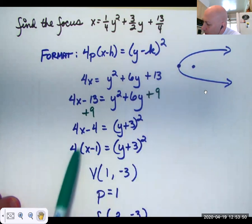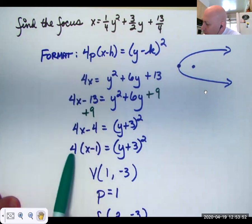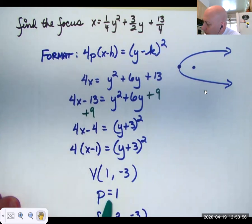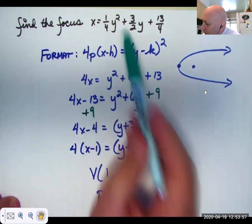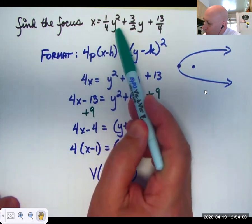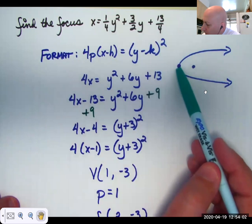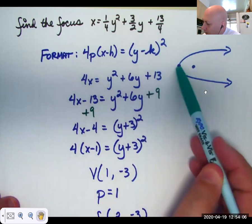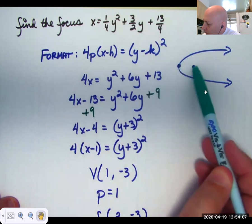And 4p equals 4, so p equals 1. I know this is an x equals y squared parabola opening to the right. So if the vertex is the point 1, negative 3, then the focus must be the point 2, negative 3.